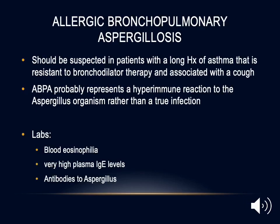Allergic bronchopulmonary aspergillosis (ABPA) is a complex hypersensitivity reaction of the airways that occurs when bronchi become colonized by Aspergillus species. ABPA most commonly develops in patients with asthma, presenting with repeated episodes of bronchial obstruction, inflammation, and mucoid impaction leading to central bronchiectasis. Pathologically, patients have mucoid impaction of the bronchi with eosinophilic pneumonia and bronchocentric granulomatosis. Labs show blood eosinophilia, very high plasma IgE levels, and antibody formation to Aspergillus, which helps differentiate the diagnosis.